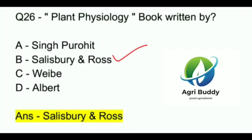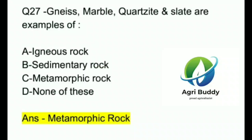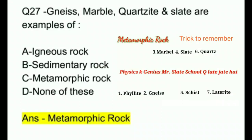Question 27. Gneiss, marble, quartzite and slate are examples of? A. Igneous rocks. B. Sedimentary rocks. C. Metamorphic rocks. D. None of these. And the answer is Metamorphic rocks.